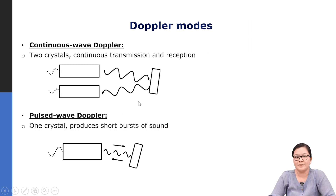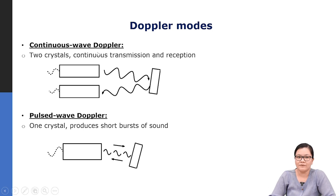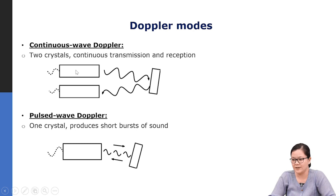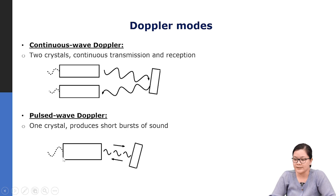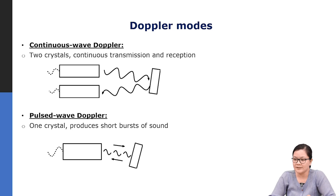Two Doppler modes are commonly used in ultrasound. Continuous wave (CW) Doppler uses two piezoelectric elements — one for continuous transmission and one for continuous reception of echo signals from the blood. Pulsed wave Doppler uses one crystal producing short bursts of ultrasound. Both modes are frequently used in clinical ultrasound.